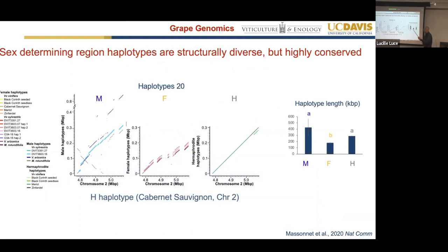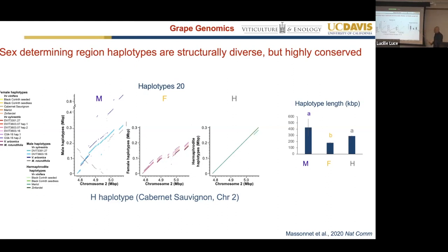First, talking about structural variability: despite looking across 20 million years of split, the female haplotype is extremely conserved across all 22 haplotypes compared to Cabernet Sauvignon. Male haplotypes — the genic information is 100% conserved, though structurally we have a large inversion in Muscadine grapes and an insertion in Arizona. The hermaphroditic haplotype, because of the bottleneck due to domestication, is also very conserved. So first observation: structural variability defines the different haplotypes, while within each haplotype we have extreme conservation despite the long evolutionary time examined.